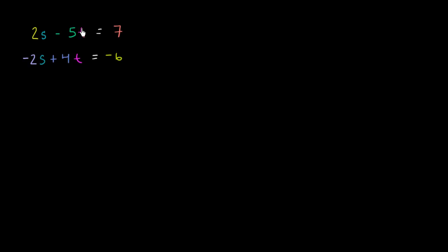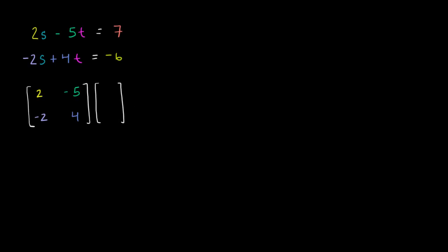The first thing we need to appreciate is that this system can be represented by a matrix equation. I'm going to take the coefficients — 2, negative 5, negative 2, and positive 4 — and I'm going to claim that that matrix times the column vector s and t, being equal to the column vector 7, negative 6, is the exact same thing as the system we have right over here. These are representing the same constraints on the variables s and t.